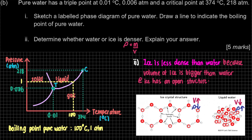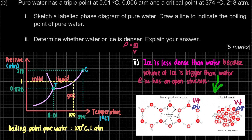To summarize: water is denser than ice. The key reason is that the volume of ice is greater than that of liquid water due to its open crystal structure. You must mention which is denser and explain why — you don't need to draw the structure. That concludes the solution for Question 4 of PSPM 2022–2023.